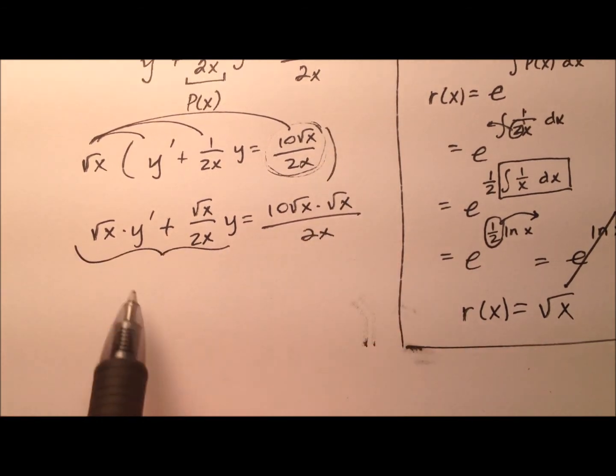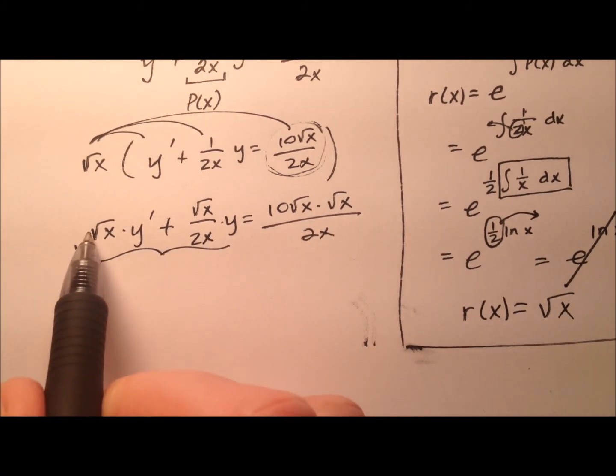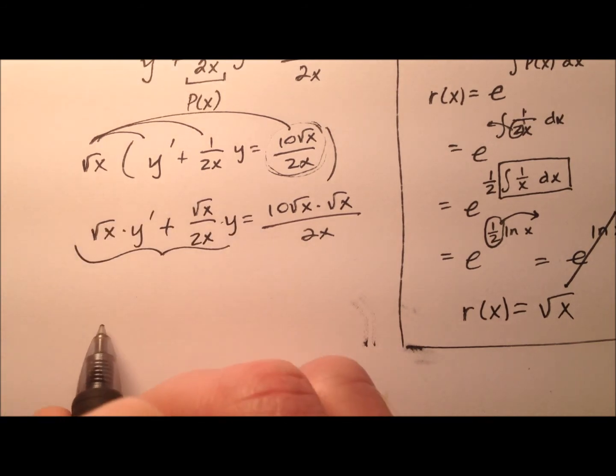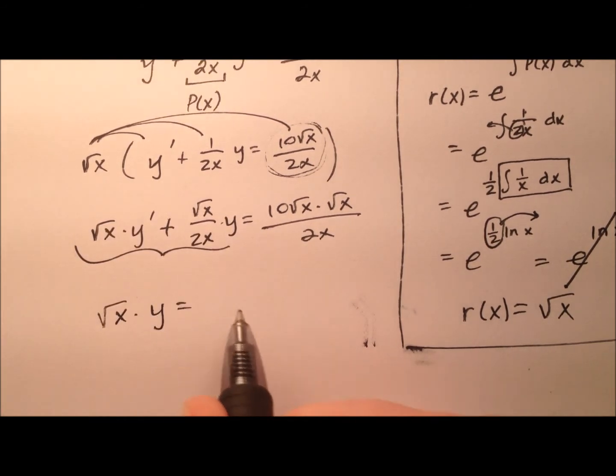But this left side is going to end up being, let's see, the product rule looks like it's where it came from. And so when I take the integral of this left side, I'll actually get the square root of x times y.